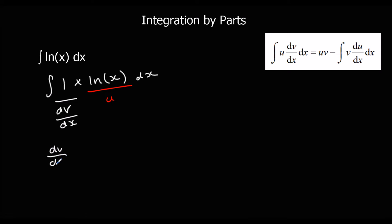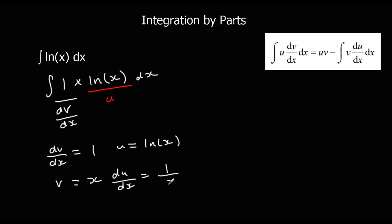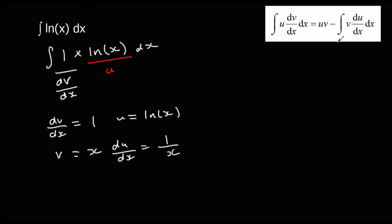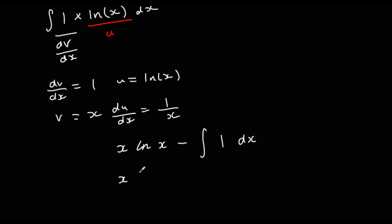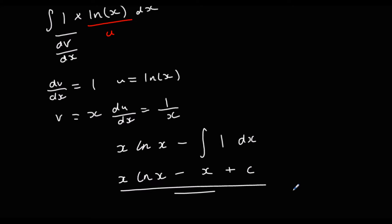If dv/dx is 1, we integrate it to get v = x. And if u = ln(x), then du/dx = 1/x. Substituting into the formula: uv gives x·ln(x), minus the integral of v·du/dx, which is x times 1/x, that's just 1, with respect to x. Integrating 1 gives x, so the answer is x·ln(x) minus x plus c. That's how we integrate ln(x).